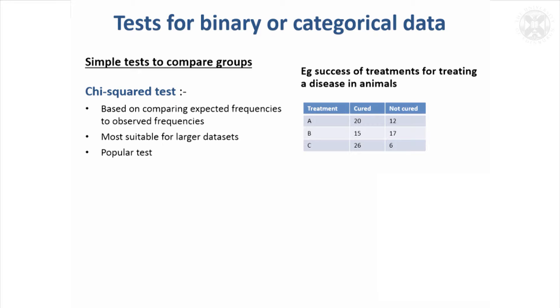And chi-squared tests are used to compare frequencies. Say you've got an outcome that is binary, three treatments, and they either cure a certain number of animals or they don't, and we want to know if the cure rate's different between the three treatments. As I'll explain in a minute, a chi-squared test is most suitable for larger data sets, however it's often used even though it's not always the most appropriate test.